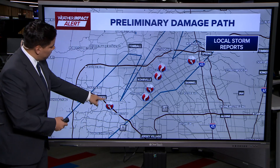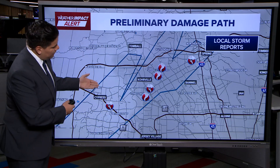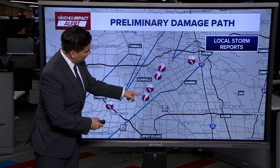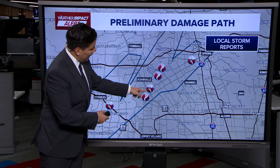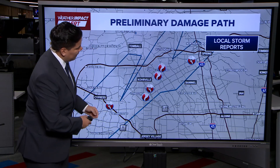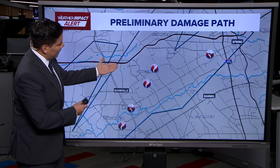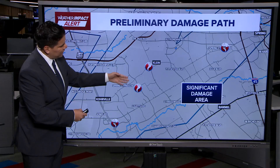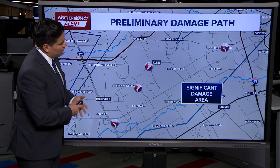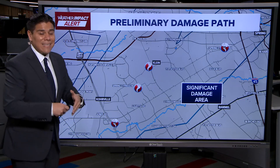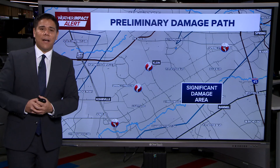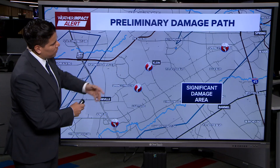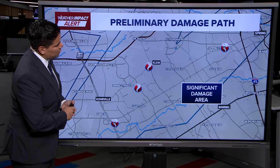We saw that funnel move over 290, and then, as we were on air, it eventually moved over Highway 249. The more heavily damaged area was around the Klein area, where they saw more of that touchdown of that system as it continued its track off towards the Woodlands.